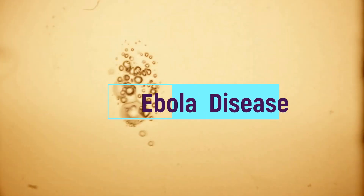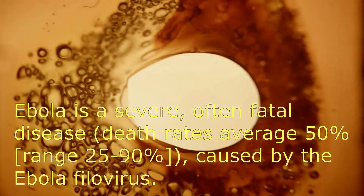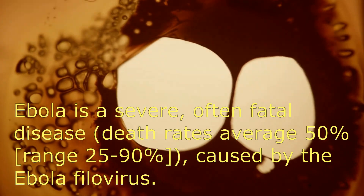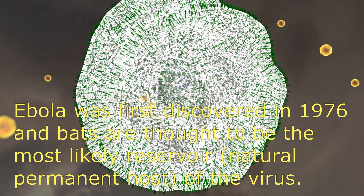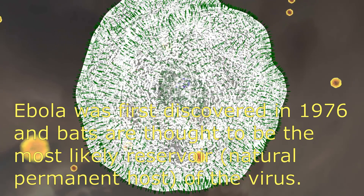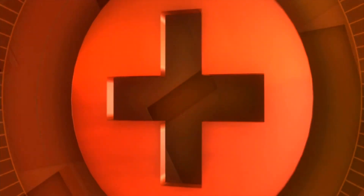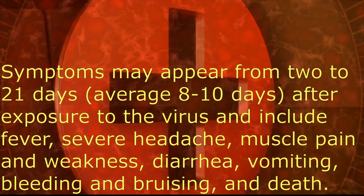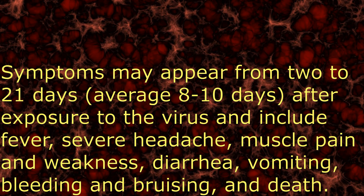Ebola is a severe, often fatal disease — death rates average 50%, ranging from 25 to 90% — caused by the Ebola filovirus. There are five different types of Ebola virus, four of which are known to cause disease in humans. Ebola was first discovered in 1976, and bats are thought to be the most likely reservoir and natural permanent host of the virus. The virus readily spreads to humans and from human to human. Direct contact through broken skin or mucous membranes with an infected person or animal, either living or dead, or with objects such as contaminated needles and syringes, is the most common way Ebola is spread.